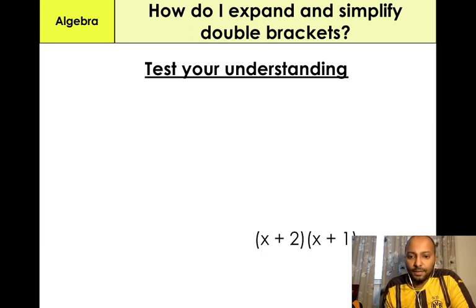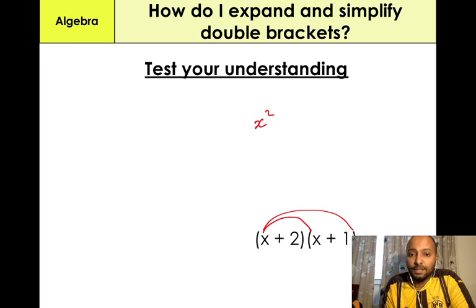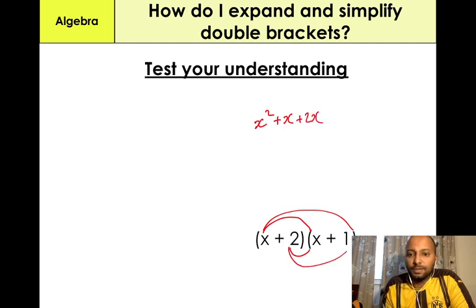(x + 2)(x + 1). Expand the brackets. X times X gives X squared. X times positive 1 gives us positive X. 2 times X, which is 2X. 2 times 1, which is 2. We have X squared plus 3X plus 2. That's our final answer.